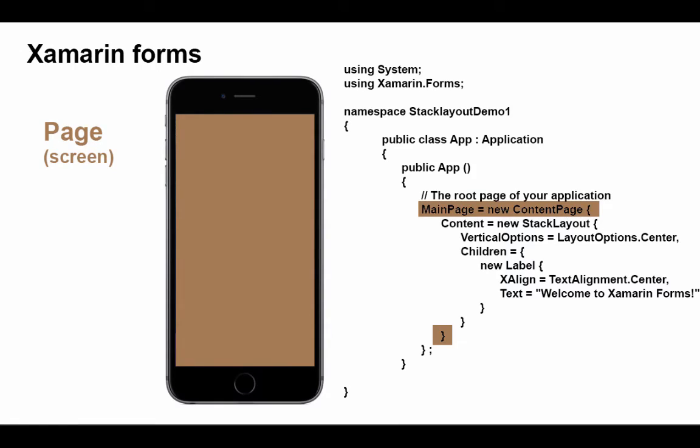Let's take a look at how a page is laid out in Xamarin.Forms. Looking at the app.cs file in our sample out-of-the-box project, we can see that a form or page is created for us called main page, and this is of a page type called content page. We'll see in a few minutes there are various types of pages.